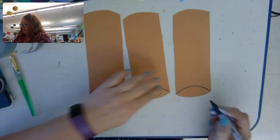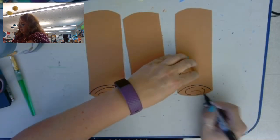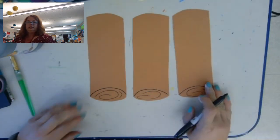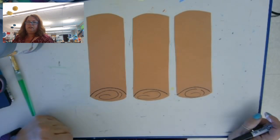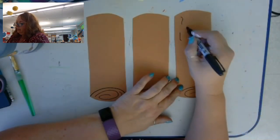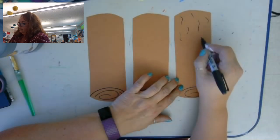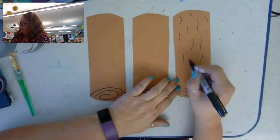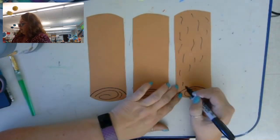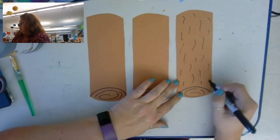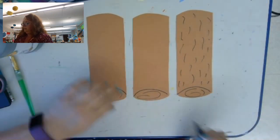I'm going to make some swirlies so it looks like the end of a log, and then I want to put lines to look like bark. I'm just using my marker to make some lines.